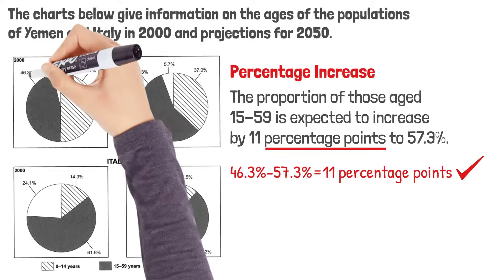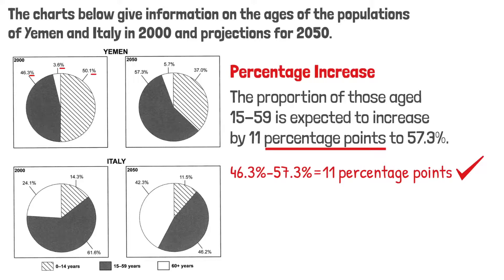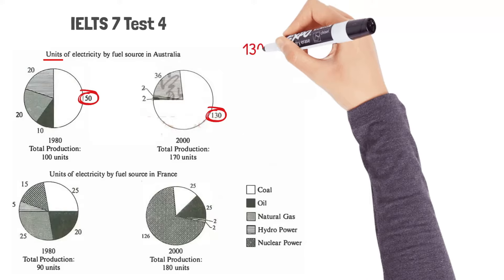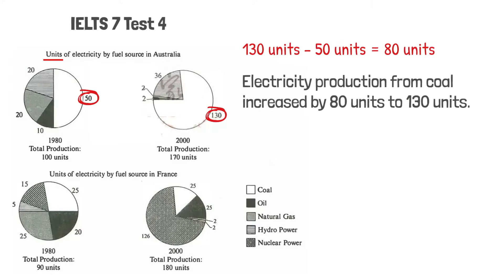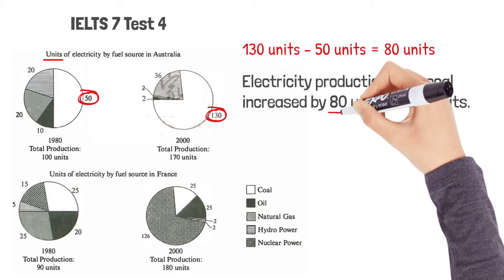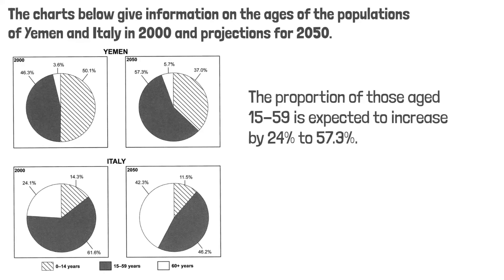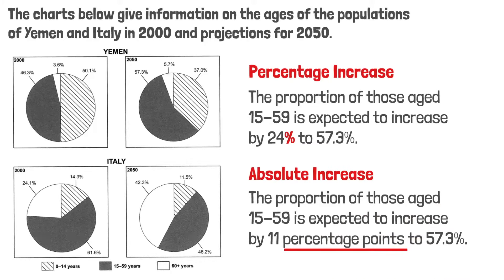You need to be very careful when the numbers are expressed as percentages. If the numbers are not shown as percentages, we can do a simple calculation and say, for example, electricity production from coal increased by 80 units to 130 units. However, as long as you express a number as a percentage, you are actually calculating a percentage increase, which is time consuming. Remember the measurement 'percentage points': the proportion of those aged 15 to 59 is expected to increase by 11 percentage points to 57.3%.